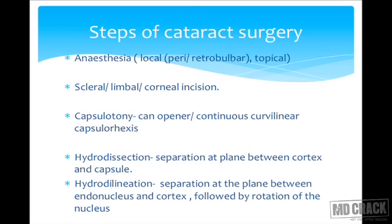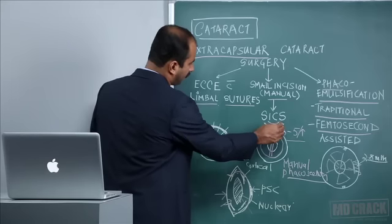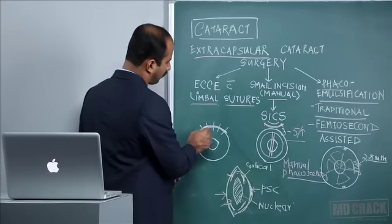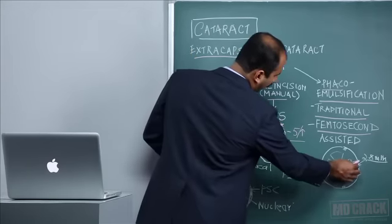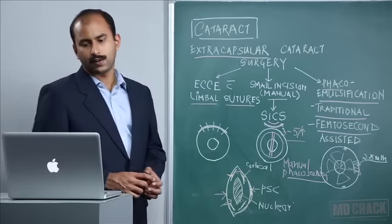Steps of cataract surgery are essentially the same for all techniques, with the main difference being incision size. Anesthesia is either local or topical; in uncooperative or mentally retarded patients, general anesthesia can be used. Local anesthesia is in the form of peribulbar anesthesia or retrobulbar with facial blocks. The incision can be scleral, limbal in case of limbal sutures, or clear corneal in case of phacoemulsification.